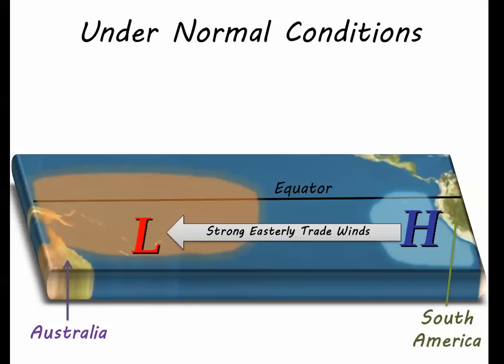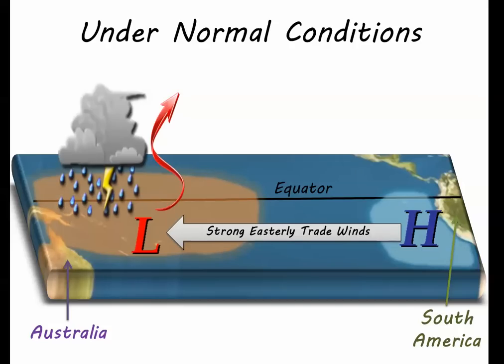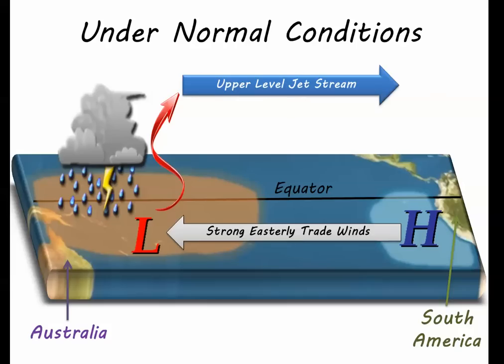Just like anywhere, with low pressure and ample warm moist air, there is rising air and thunderstorms — a lot of thunderstorms in fact. So much that the rising air contributes a great deal to the upper level jet stream flowing back toward South America, that then cools, descends, and starts the circulation all over again.